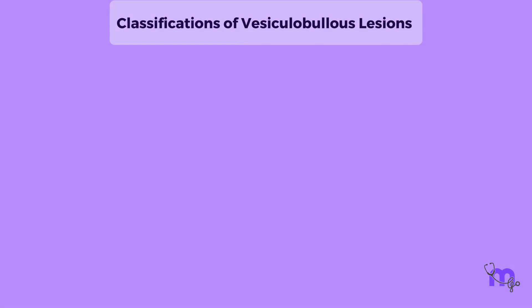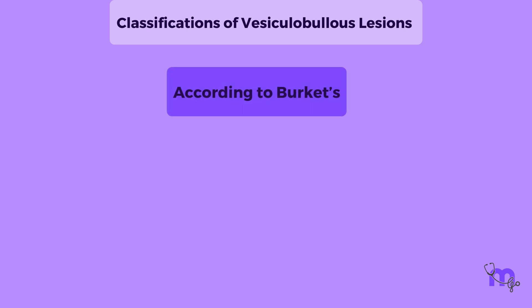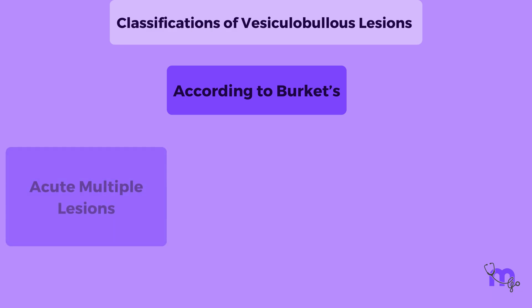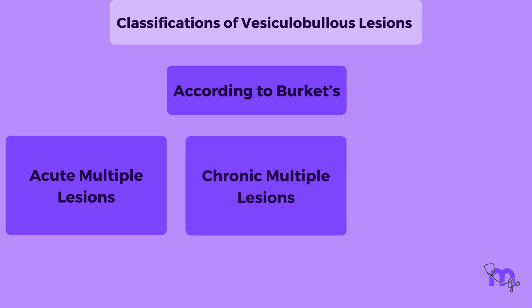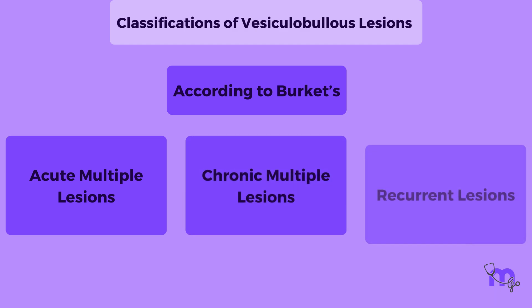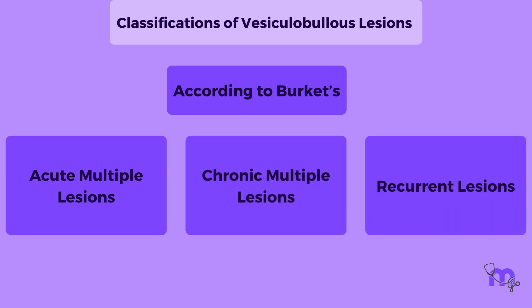Let us now enumerate vesicular bullous lesions with classifications. According to Burkitt's, the first classification categorizes them as acute multiple lesions, chronic multiple lesions, and recurrent lesions.